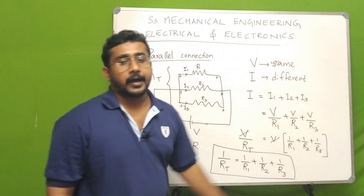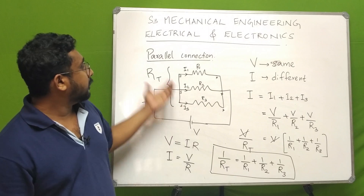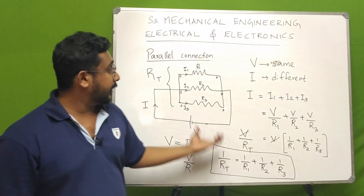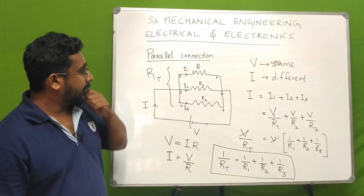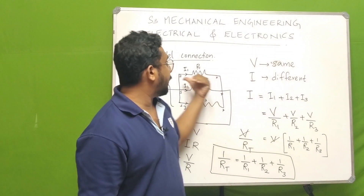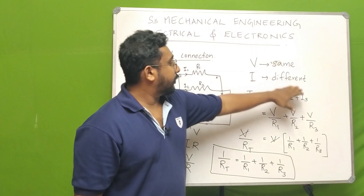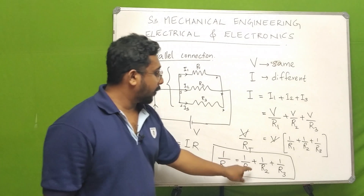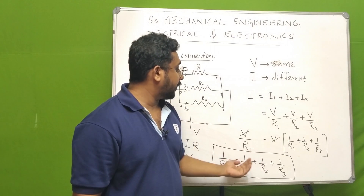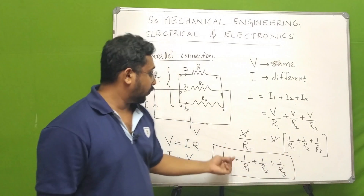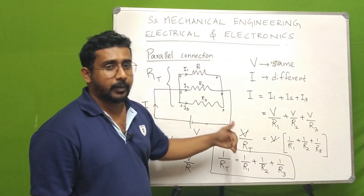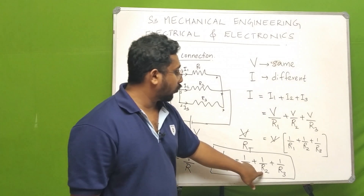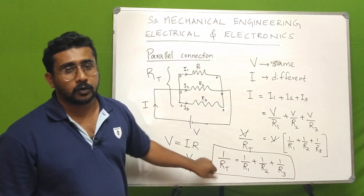Therefore, 1/RT = 1/R1 + 1/R2 + 1/R3. The reciprocal of the total resistance is equal to the sum of the reciprocals of the individual resistances. So we can get the total resistance from this formula.